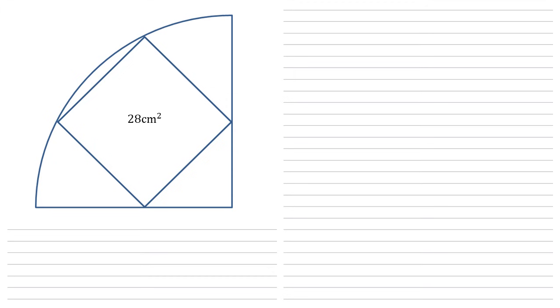In this problem we've got a quarter circle and inside the quarter circle we've got a square that's tipped to 45 degrees and it has an area of 28 square centimeters. So just using this information we need to find out the area of our quarter circle.